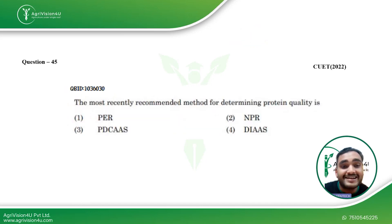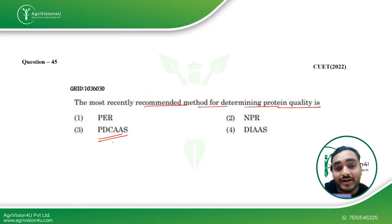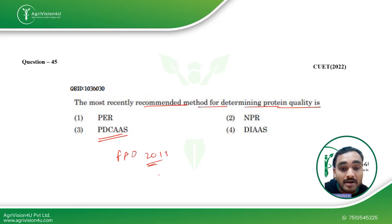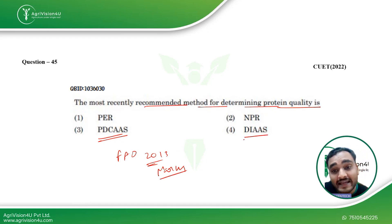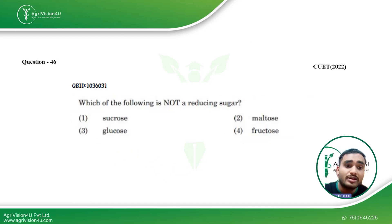Coming to the next question: the most recently recommended method for determining protein quality. Many students in the batch answered this wrong, saying PDCAAS — Protein Digestibility Corrected Amino Acid Score. However, this was changed by FAO in March 2013 to DIAAS — Digestible Indispensable Amino Acid Score. This is now the newer method for determining protein quality. Be aware — this question can be asked not only in CVT but in other food science exams as well.